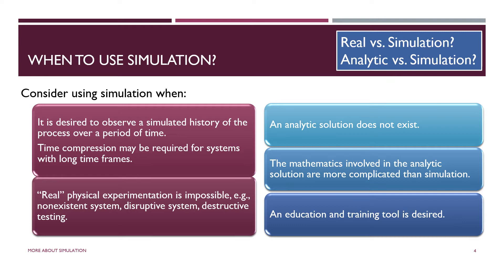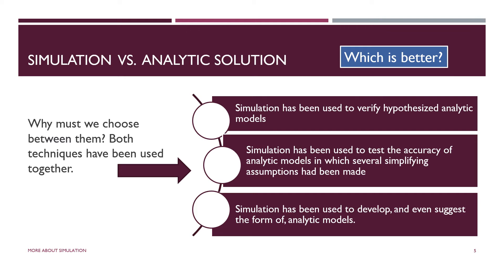When looking at simulation as opposed to a mathematical model or analytic solution, it's nice to know that we don't have to choose. Often we need all the techniques at our disposal in order to understand the system. Looking at previous research in the area, you may find that simulation is sometimes used to verify an analytical model. How do we know that the analytical model — like the queuing models — is correct?